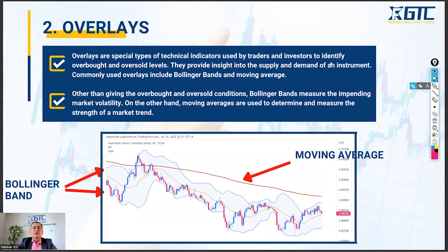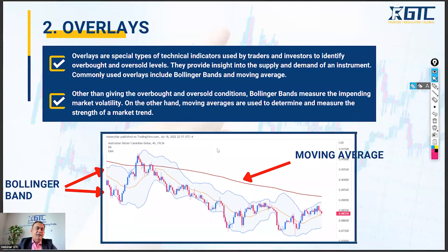We've talked about oscillators and I've explained one type of oscillating indicator. Now let's talk about overlays. We have different types of overlay indicators — hundreds are available, but the most commonly used are moving averages and Bollinger Bands. I think I've not found any trader who has not used moving averages in his technical analysis. Moving averages are the most commonly used overlay indicators.